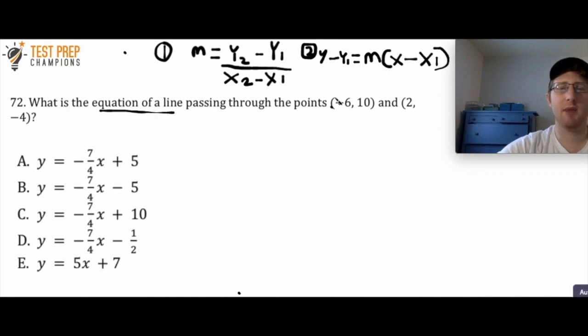So when I look at my pairs here, I've got (-6, 10). The first number in any pair is an x-coordinate and the second number in any pair is always called a y-coordinate. So I'm going to call this x1 and I'm going to call this y1.